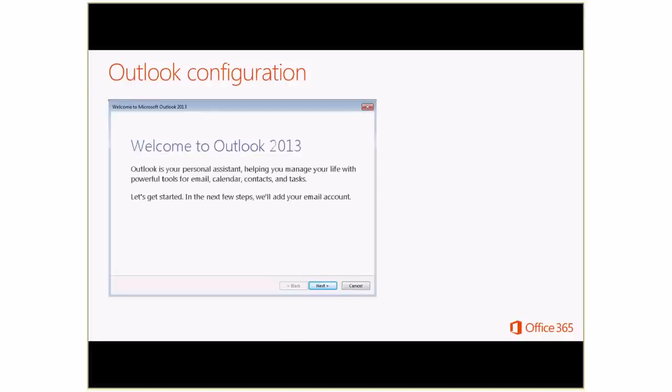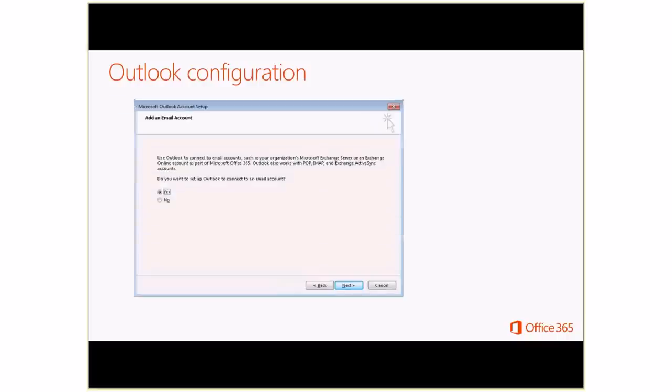We've logged into the machine and now we're trying to configure Outlook. We simply launch Outlook for the first time and get a Welcome to Outlook window. We click Next, and then we get asked if we want to add an email account. We simply say Yes again and click Next.